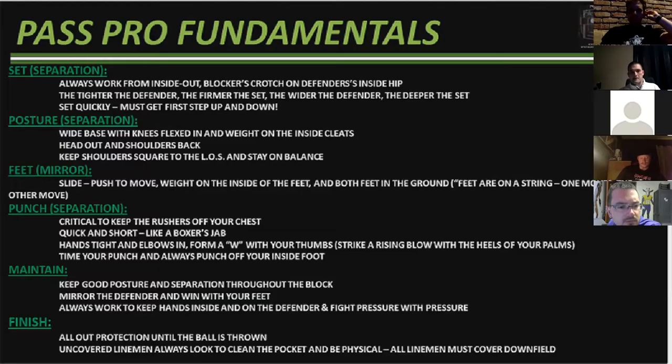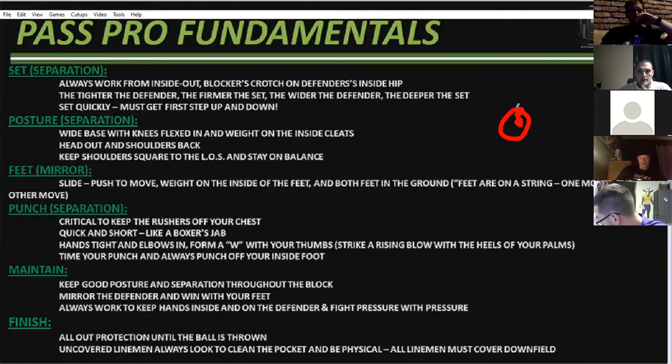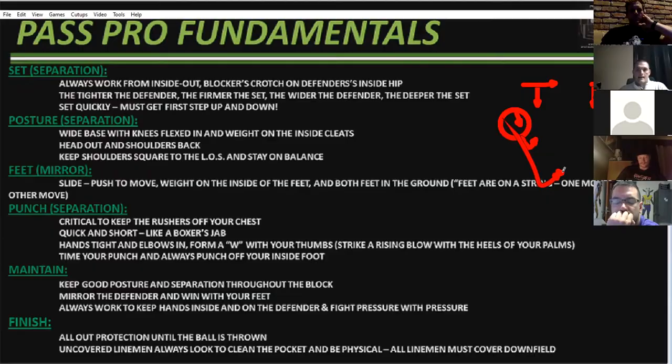Number one, it's with your set. If I'm the offensive lineman and I've got a three technique right there, the tighter he is, the firmer your set. Now if you're a tackle and you've got a wide five technique or nine technique, the wider he is, the more depth you're going to need. We just try to keep it real simple — give the kids two or three things to focus on and let them get really good at that. The tighter he is, the firmer you're going to be; the wider he is, the more depth you naturally get. Always staying inside out.